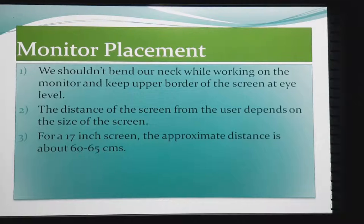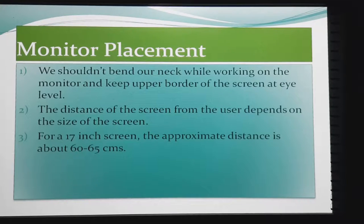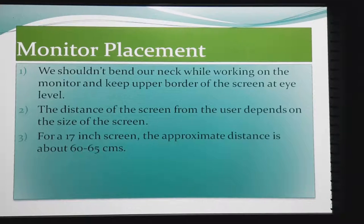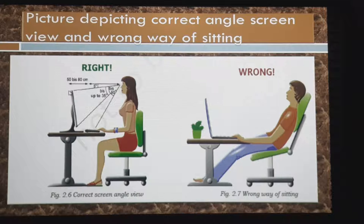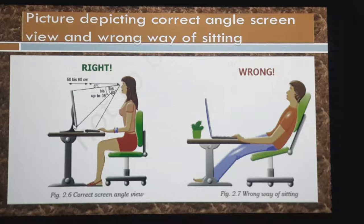The third factor affecting typing ergonomics is monitor placement — how to keep our monitor in order to work on a computer efficiently. We should not bend our neck while working on the monitor; it should be only slightly tilted but not bent much. The upper border of the screen should always be at eye level — horizontal eye level. The lower level of the monitor should maintain an angle of depression with the line of our eyesight.